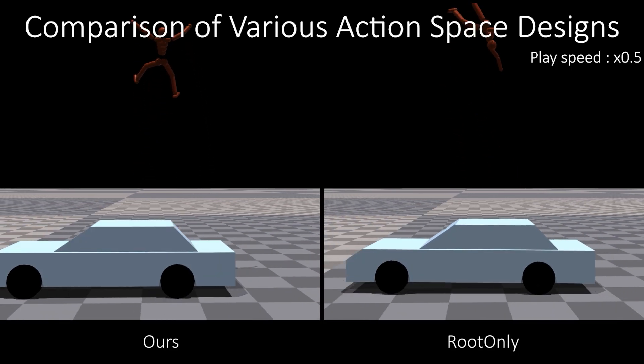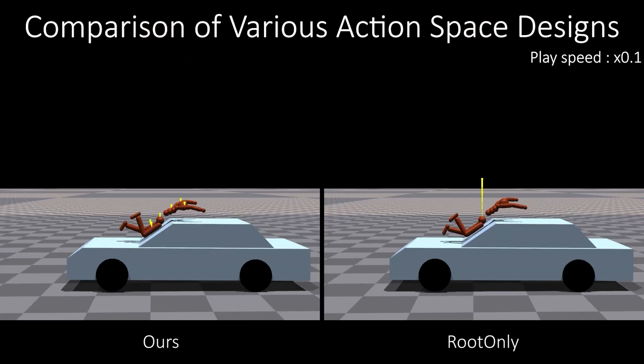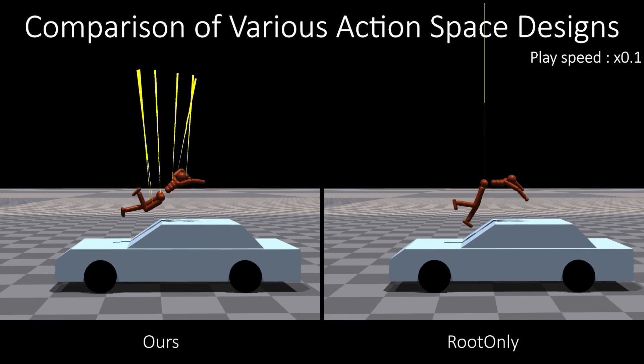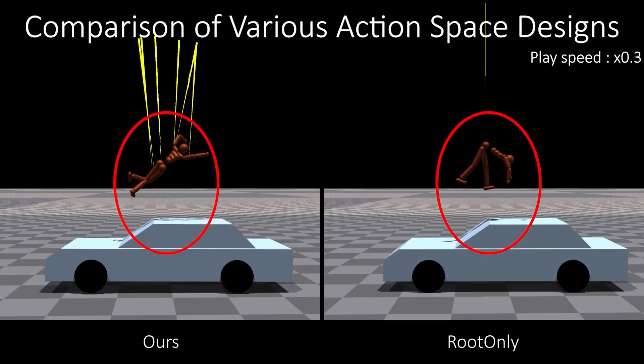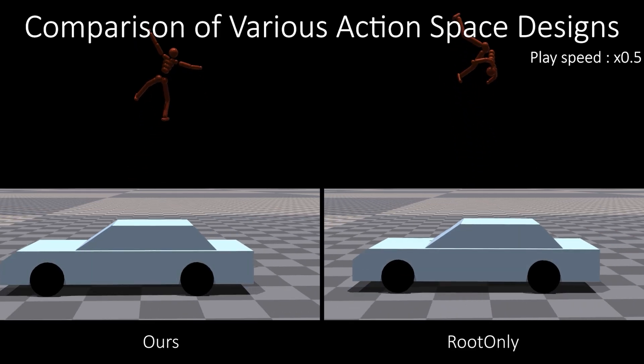This experiment compares various methods for applying perturbation forces to the actor. In the first scene, the actor is struck by a car and propelled into the air. Yellow lines indicate the controlled forces. Our method preserves posture during the collision, whereas root-only method fails, causing unnatural torso folding.